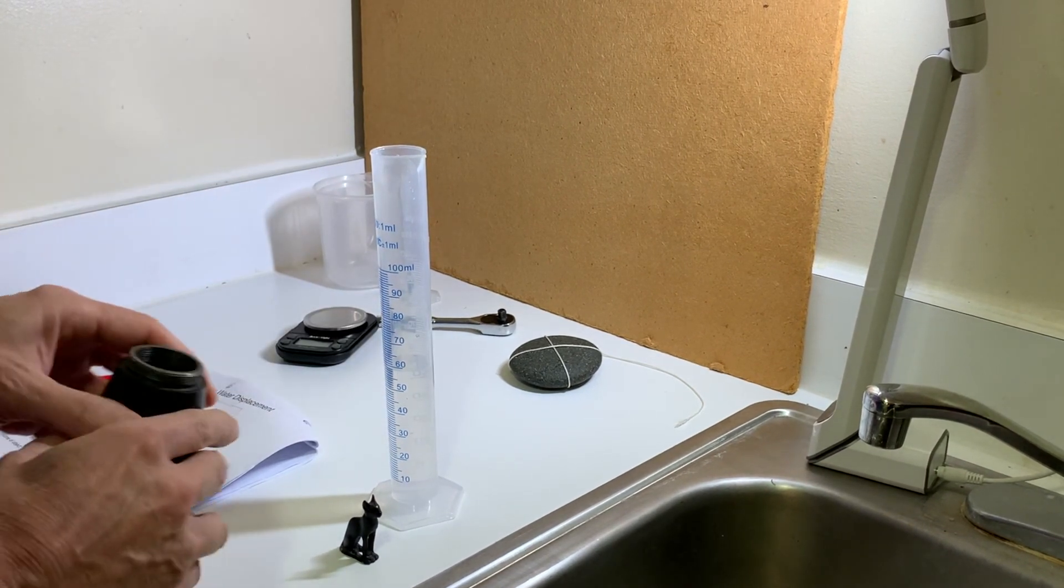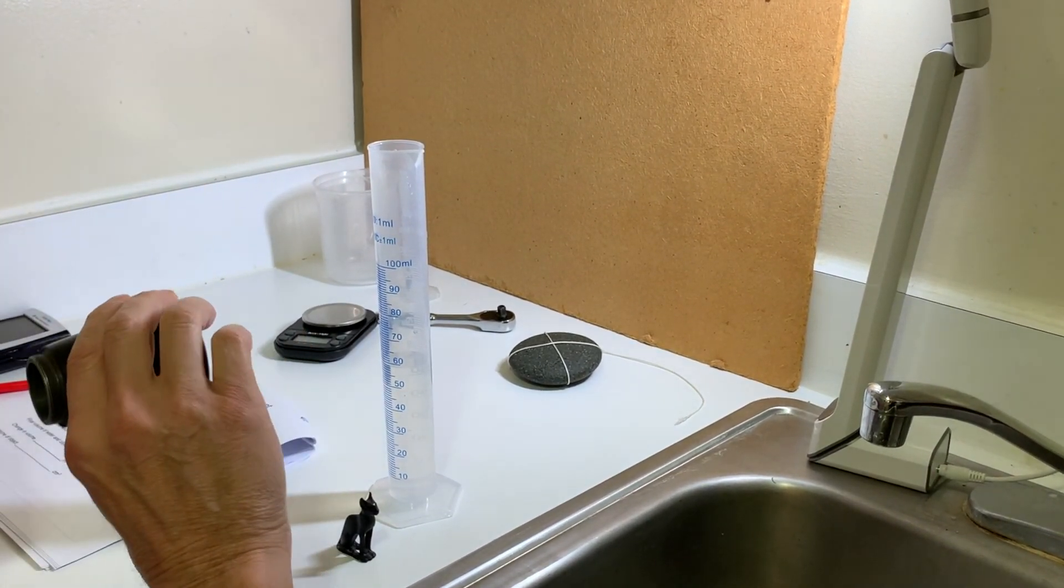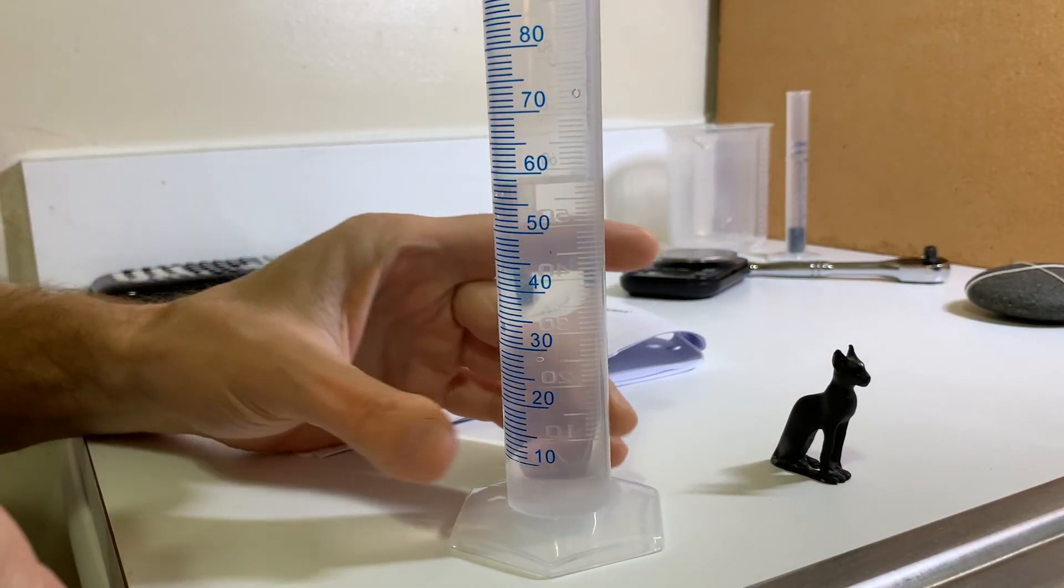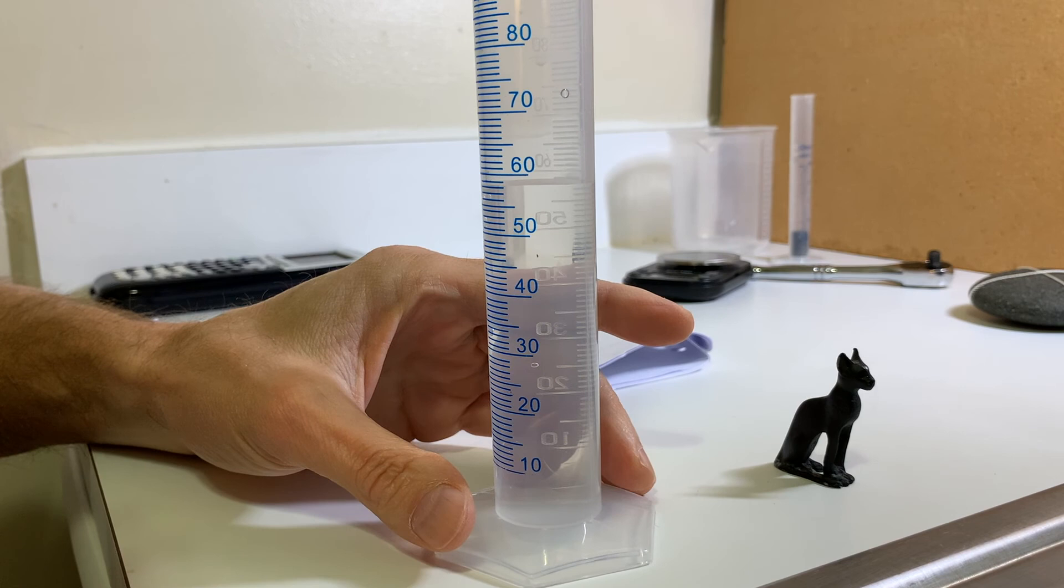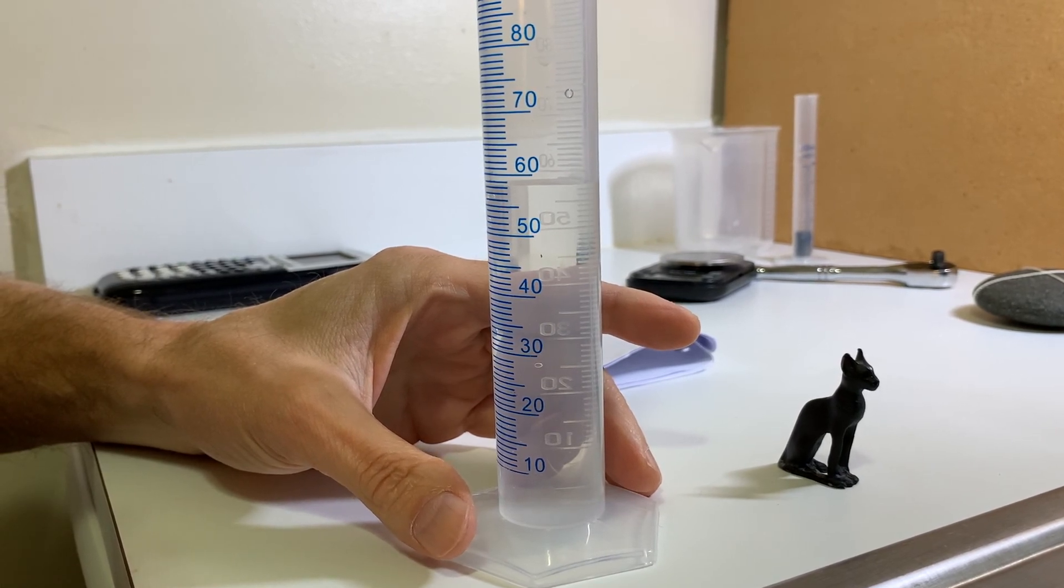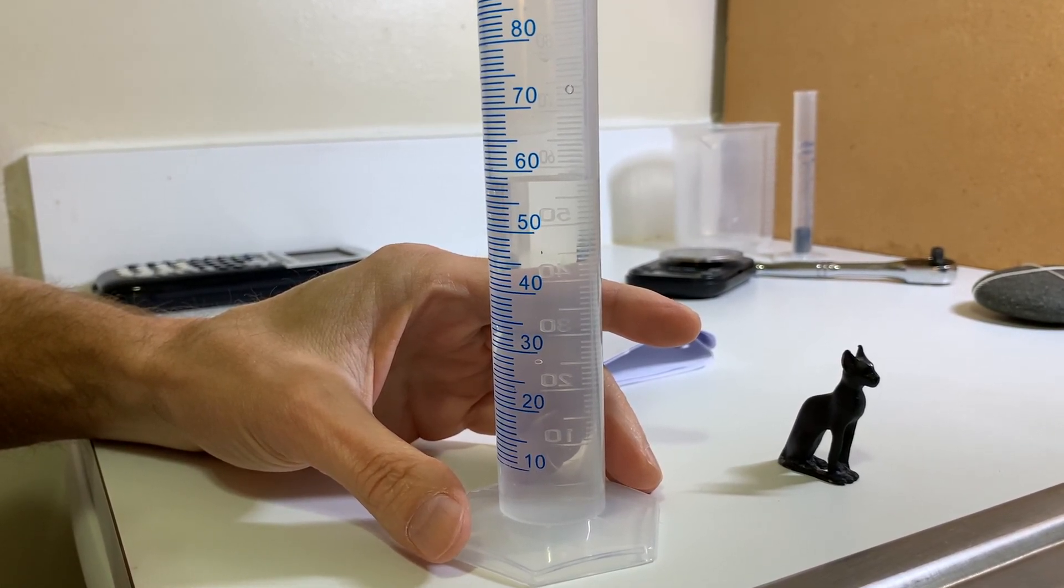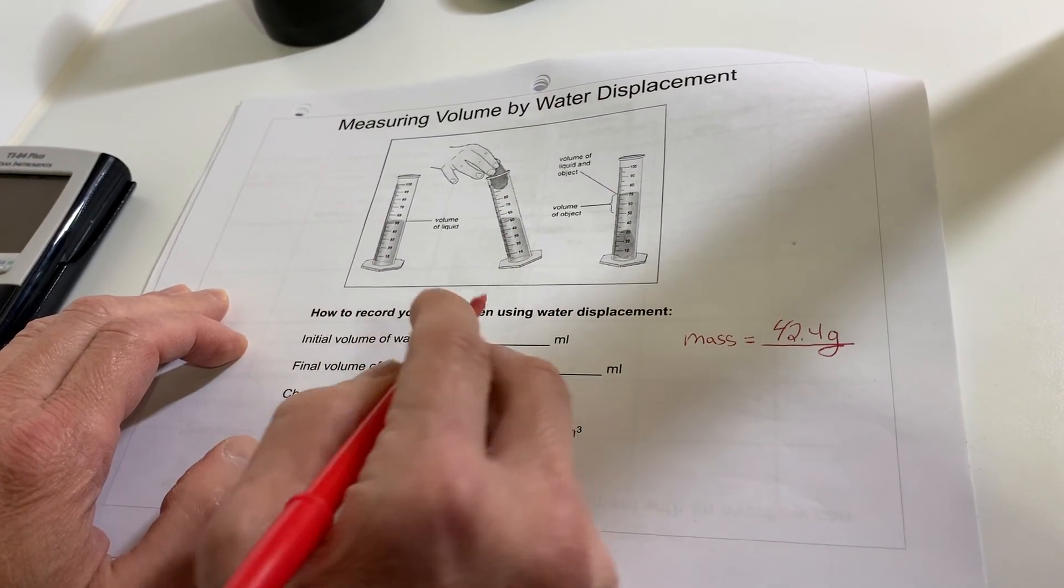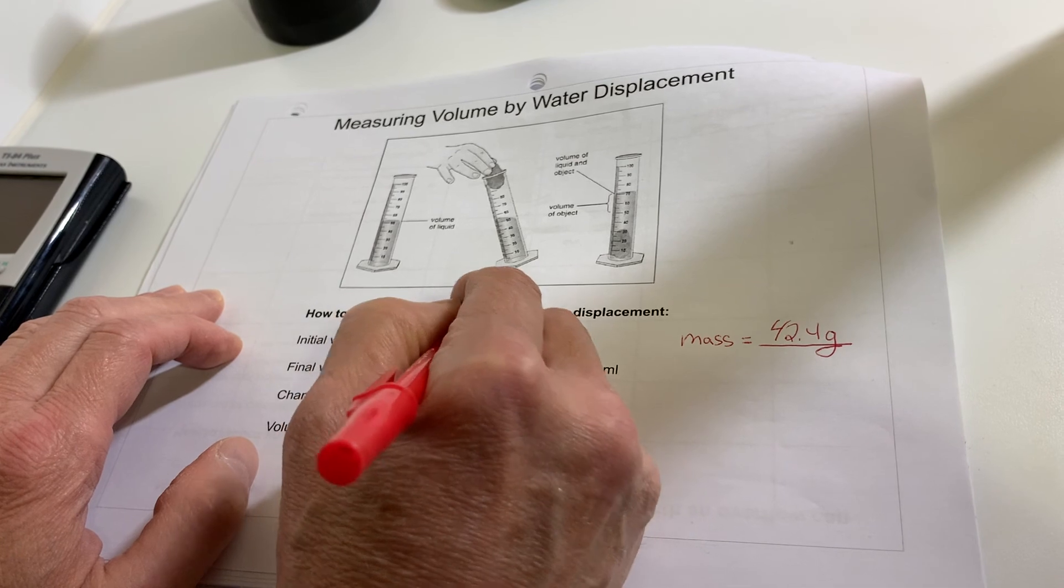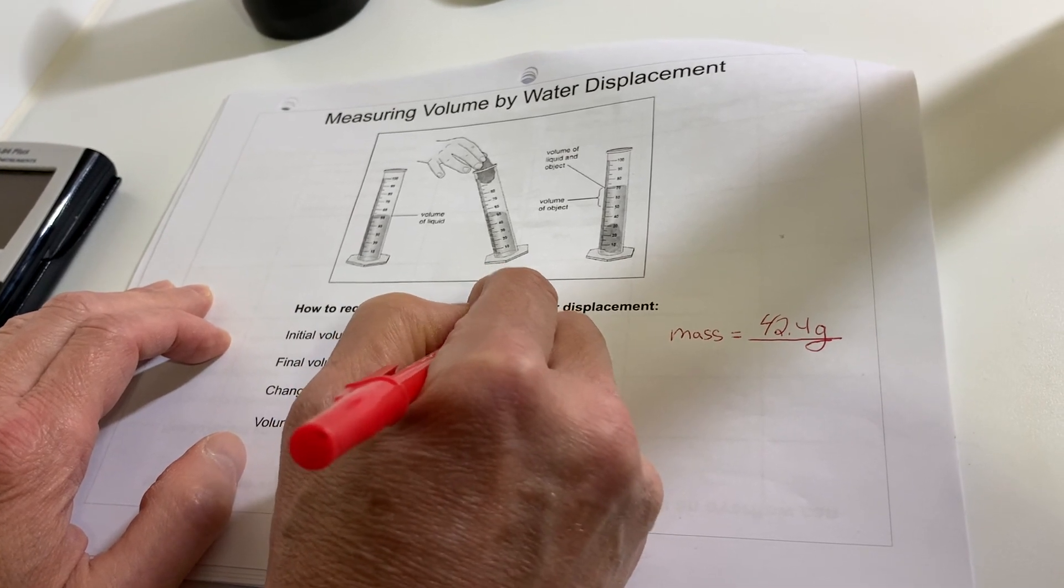Doesn't matter how much I put in as long as the cat can be submerged. And I'll need my magnifier to see it. So I'm going to make sure all the bubbles are out and make sure I'm reading the bottom of the meniscus and looks to me like 58.2 milliliters. Now I'm going to write the initial volume that I just read, which is 58.2 milliliters.